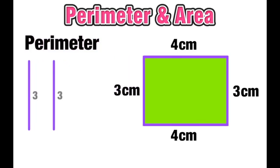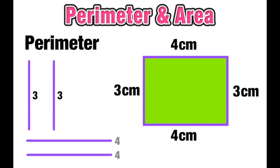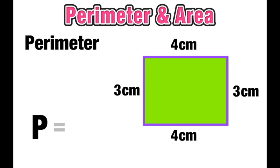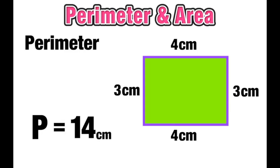I can visualize this by imagining taking the two widths — both three centimeters long each — as well as the two lengths that are both four centimeters each, and adding them all together: three plus three plus four plus four, which gives us a perimeter of 14 centimeters — the sum of all the sides of the rectangle.